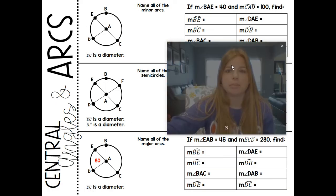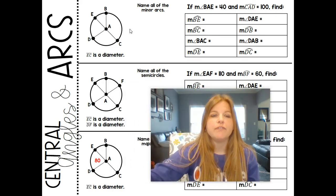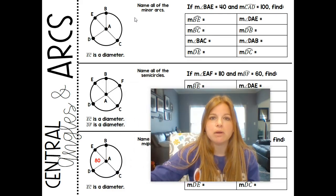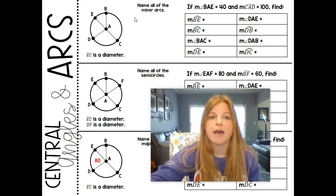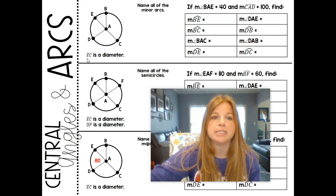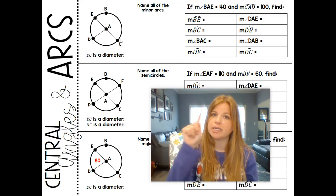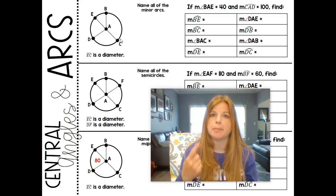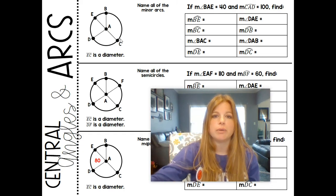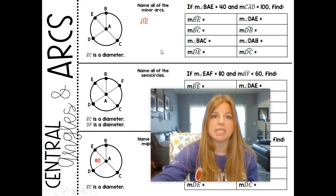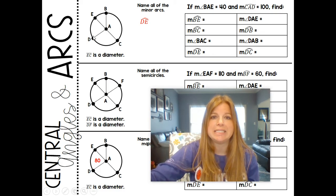Let's take a look at some problems here on my screen. First one says name all of the minor arcs. So minor arcs are less than 180 degrees. I've got five of them here. Now it does say here as a note, EC is the diameter. It's really important to know that that's a diameter because the diameter cuts a circle in half. And if it cuts a circle in half, then it's 180 degrees. And I need to use that because my minor arcs need to be less than 180. So if I wanted to start naming some arcs, DE is definitely a minor arc.